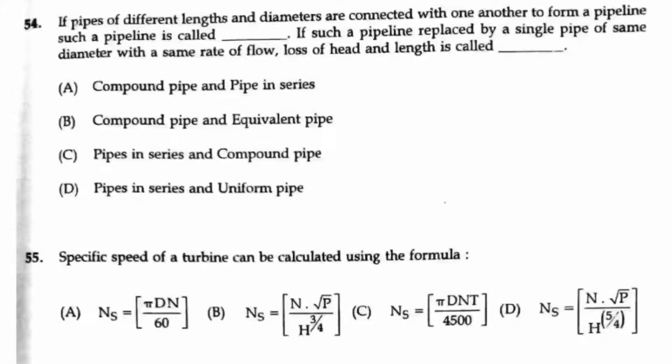Question 54. If the pipes of different lengths and diameters are connected with one another to form a pipeline, such a pipeline is called dash. So if one or more pipes are connected together to form a single pipeline, we call it as a compound pipe.